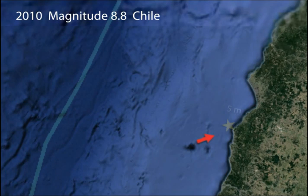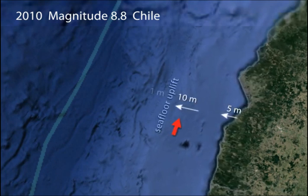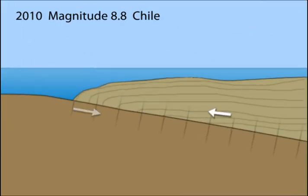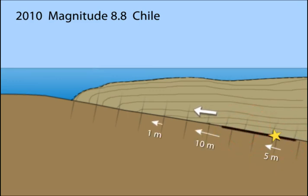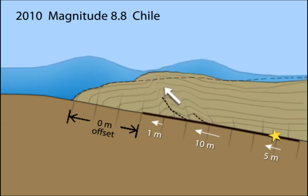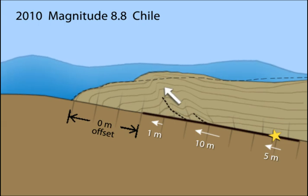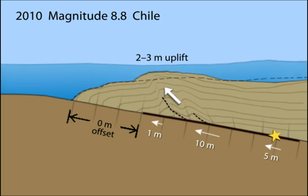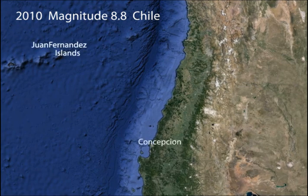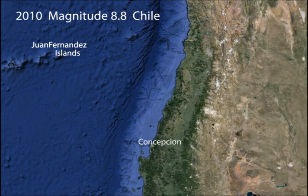Fault displacement ranged from 5 meters at the hypocenter beneath the coast to 10 meters midway to the trench, then decreased to little or no displacement at the trench. Westward displacement of the continental shelf above the plate boundary caused broad uplift of the seafloor. In addition, the change in amount of displacement along the plate boundary caused internal deformation of the overriding plate. These effects combined to uplift the ocean floor by 2 to 3 meters, generating the deadly local tsunami along the coast of South America and Juan Fernandez Islands.